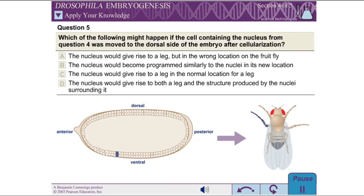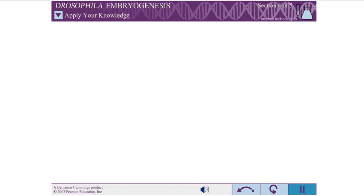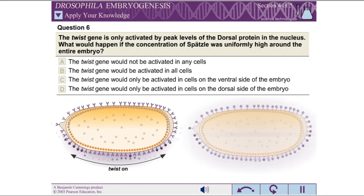Question 5: Which of the following might happen if the cell containing the nucleus from question 4 was moved to the dorsal side of the embryo after cellularization? Question 6: The twist gene is only activated by peak levels of the Dorsal protein in the nucleus. What would happen if the concentration of Spaetzle was uniformly high around the entire embryo?